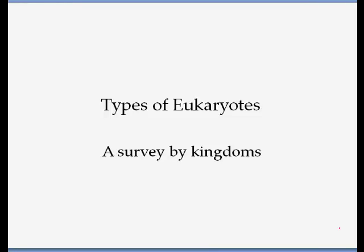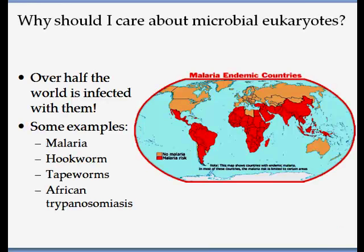In this section we are going to look at different eukaryotes and study the different kingdoms that they are found in. I'm going to give you a review of the four or five different kingdoms and look at some of the major features of each. We study this because half of the diseases in the world are caused by certain microbes that belong to one of these groups.